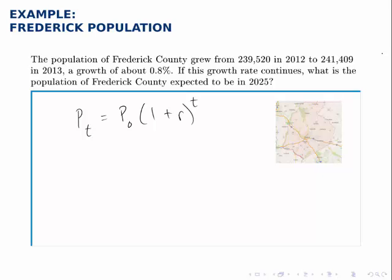Here's an exponential growth example. The population of Frederick County grew from 239,520 in 2012 to 241,409 in 2013, a growth of about 0.8%. If this growth rate continues, what is the population of Frederick County expected to be in 2025?